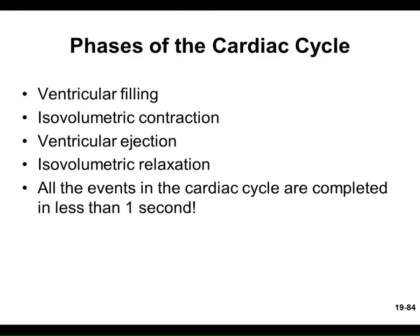Number three, ventricular ejection — squeezing hard enough that blood is now being ejected, leaving the ventricle through the semilunar valves — either the aortic or pulmonary valve. Then there's isovolumetric relaxation: after ejecting blood, the heart relaxes but the volume isn't changing yet because more blood hasn't come in. This completes a full cycle — just visualize it; don't memorize phrases.